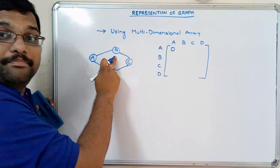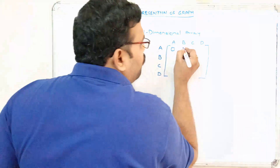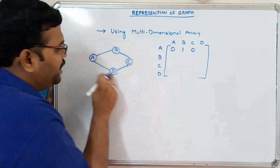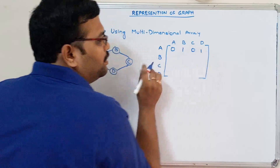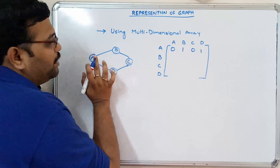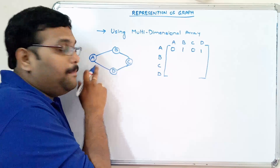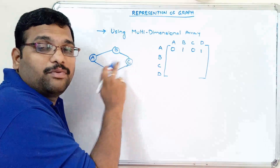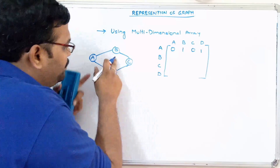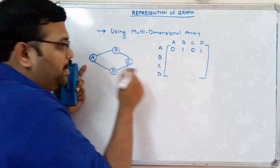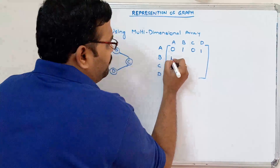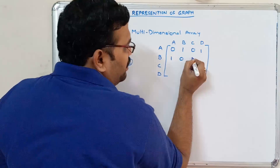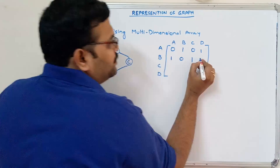A to B — yes, it has an edge, so one. A to C — there is no edge, so zero. A to D — yes, one. Now B to A — yes, because this is an undirected graph, it's bidirectional, so A to B equals B to A. So B to A is one. B to B — there is no self-loop. B to C — there is an edge. B to D — there is no edge.